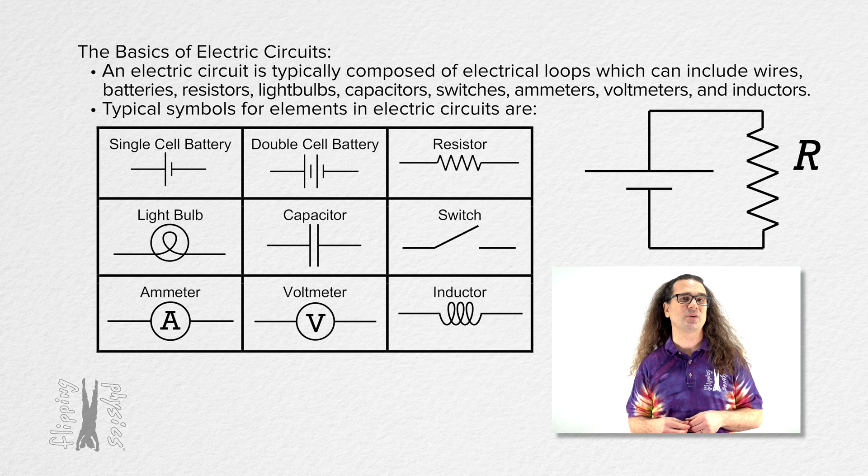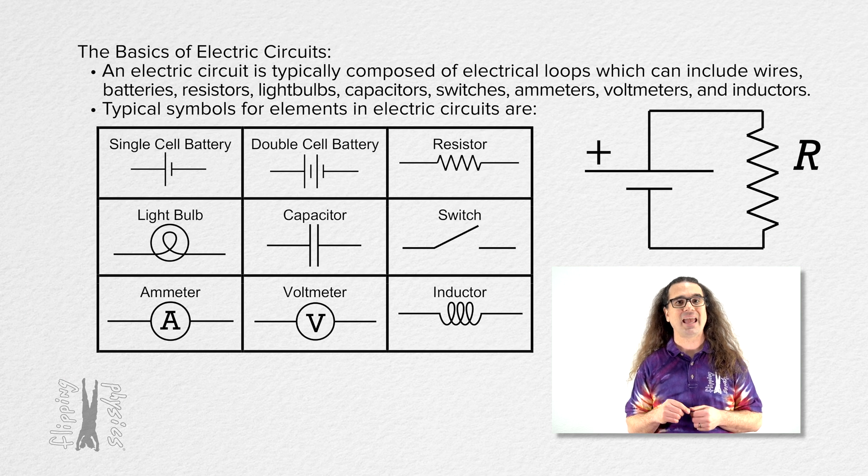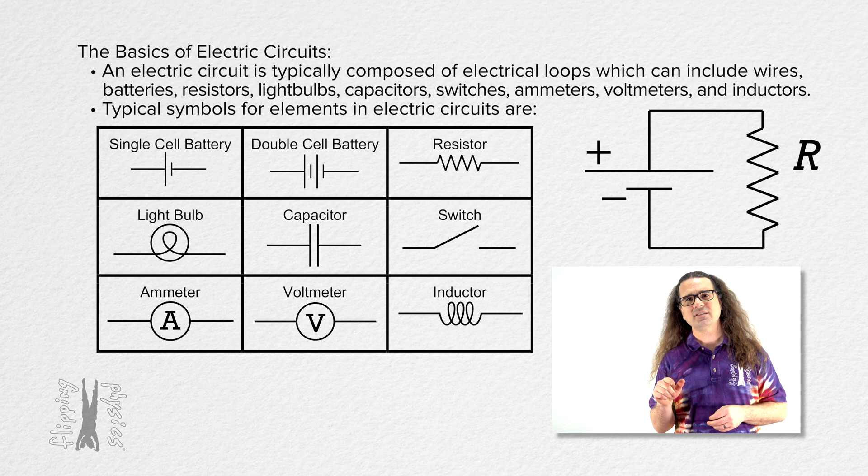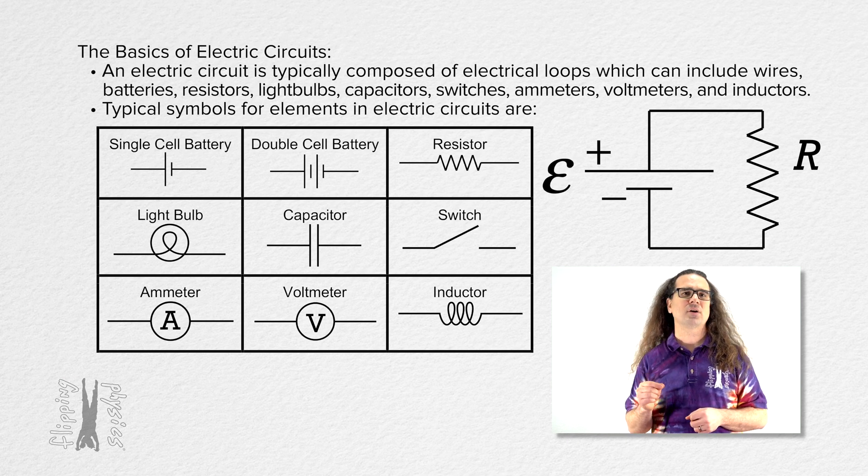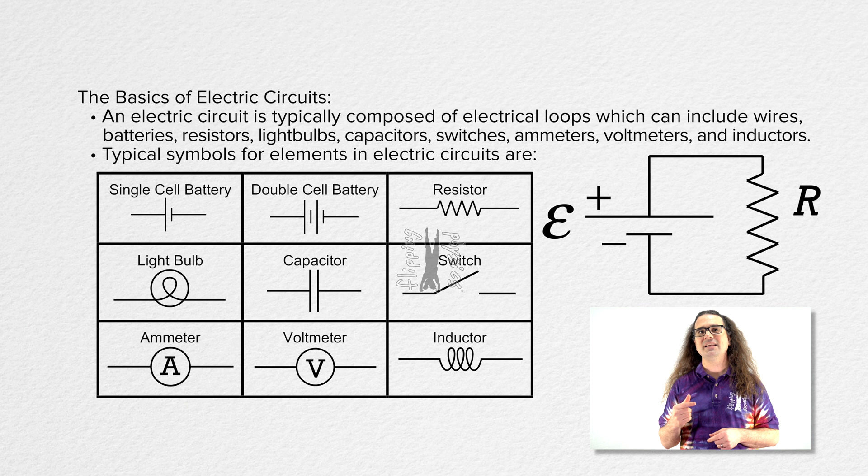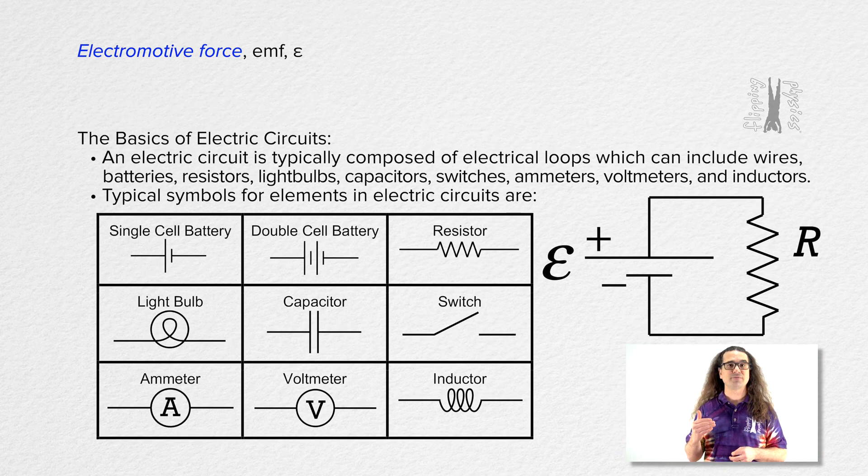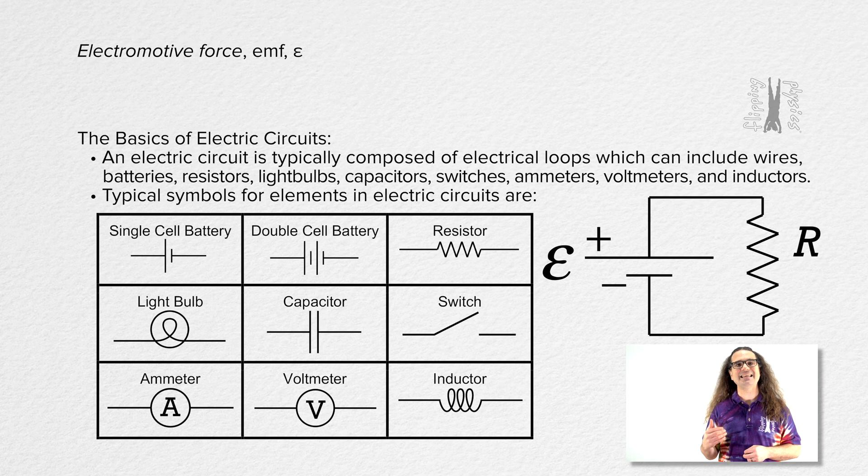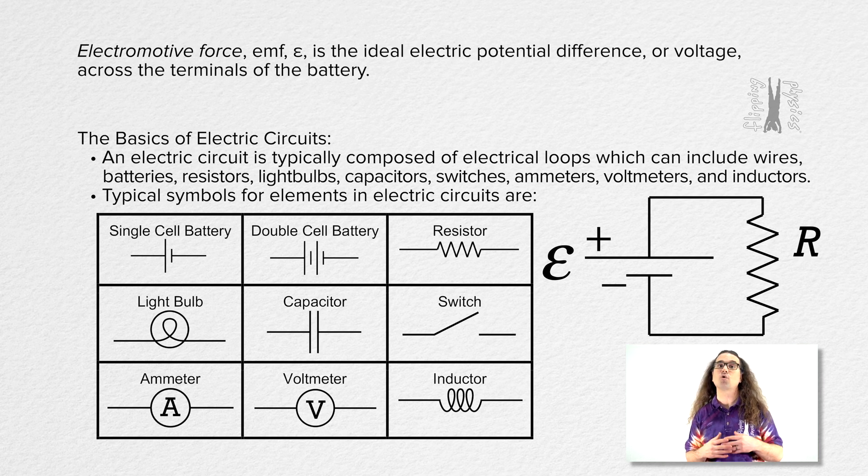Let's look at a simple circuit with a battery and a resistor connected by wires. The long line of the battery is the positive terminal and the short line is the negative terminal. Next to the battery, I am going to place a lowercase Greek letter epsilon. Epsilon is the symbol for electromotive force, which is often called the EMF of the battery. The electromotive force, or EMF, of a battery is the ideal electric potential difference, or voltage, across the terminals of the battery.